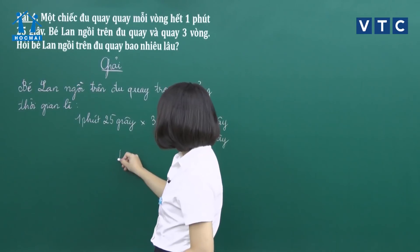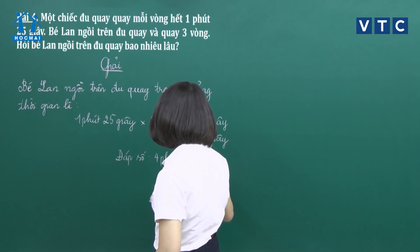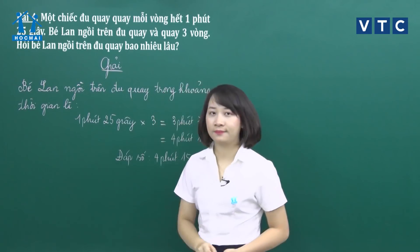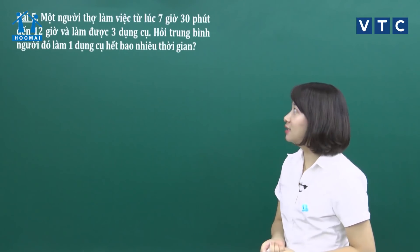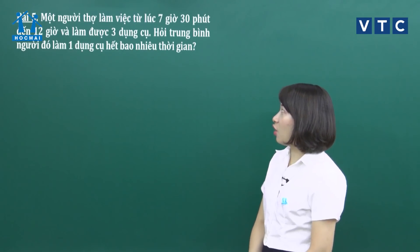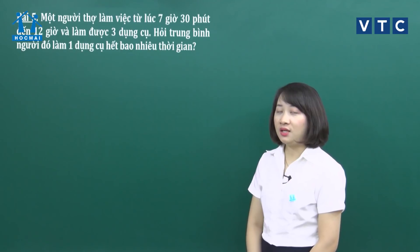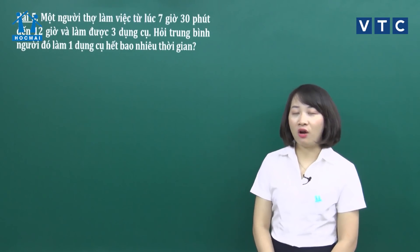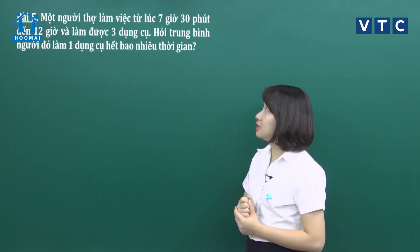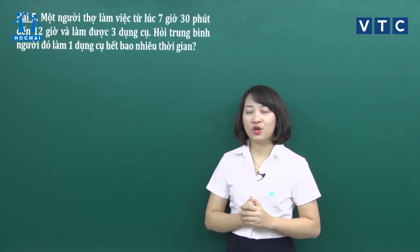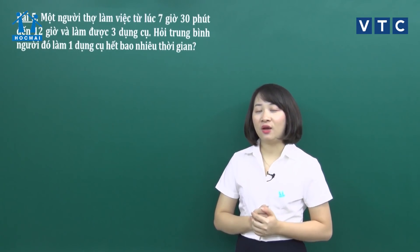Đáp số: 4 phút 15 giây. Bài tập số 5: Một người thợ làm việc từ lúc 7 giờ 30 phút đến 12 giờ và làm được 3 dụng cụ. Hỏi trung bình người đó làm 1 dụng cụ thì hết bao nhiêu thời gian? Chúng ta phải tính khoảng thời gian để làm 3 dụng cụ: thời điểm kết thúc trừ thời điểm xuất phát, tức là 12 giờ trừ 7 giờ 30 phút.